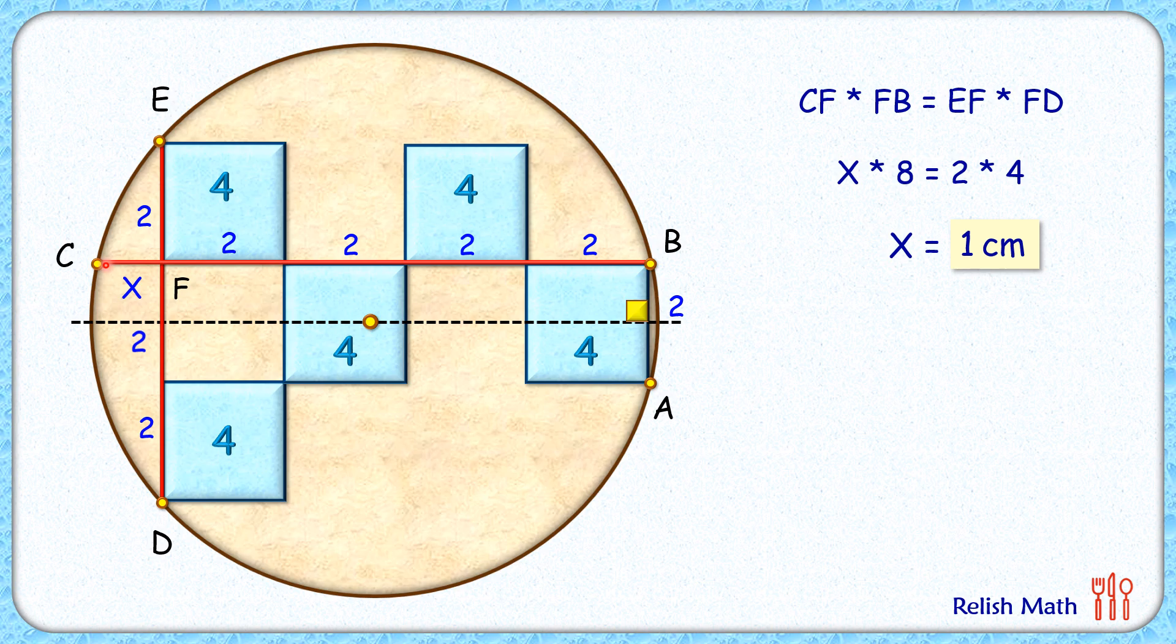To find the radius let's join CA. Now CA is a chord which is subtending an angle of 90 degrees at the circumference, thus CA is also the diameter of the circle or the length CA is 2R.